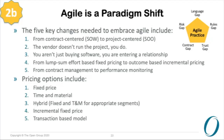Another important change: most governments currently focus on lump sum, fixed-based pricing — a fixed bid so vendors can respond to an RFP — versus incremental pricing, which is a major policy-level change. In terms of pricing options, the most successful one we have seen is P3, which is hybrid pricing: a mix of fixed and time-and-material pricing for appropriate segments, or transaction-based pricing where the vendor's charges are related to the success of the program. These are the paradigm shifts needed when Agile is adopted in government, and we are still working towards it.